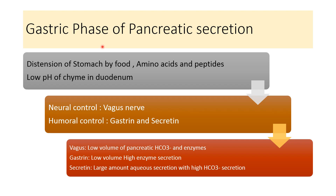Gastric phase of pancreatic secretion starts when food enters the stomach, converting into chyme, producing distension of the stomach and products of protein digestion like amino acids and peptides, as well as the low pH of the chyme inside the duodenum. It is mediated by neural and humoral control. Neural control is mediated by stimulation of the vagus nerve; chemical control is by release of hormones gastrin and secretin. Vagus nerve stimulation produces low volume pancreatic juice containing bicarbonate and enzyme. Gastrin increases pancreatic juice secretion with low volume and high enzyme content; secretin increases large aqueous secretion with high bicarbonate.